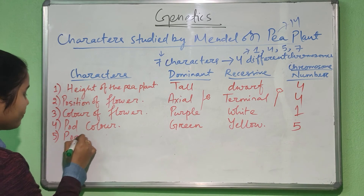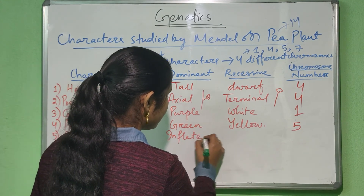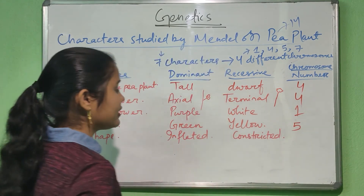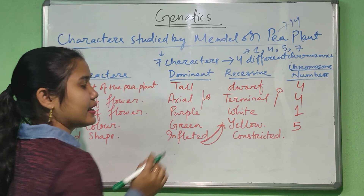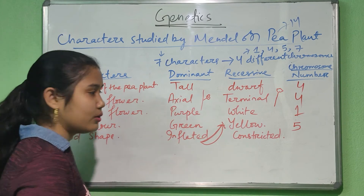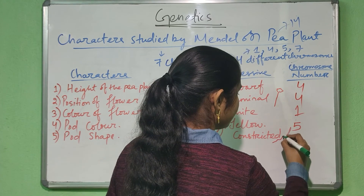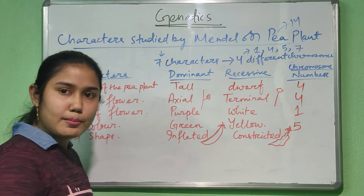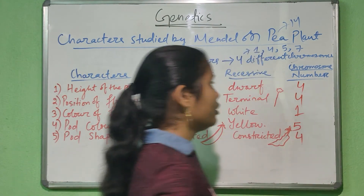The fifth character is the pod shape. The pod can be inflated or constricted. An inflated pod is smooth and rounded — it is the dominant character. A constricted pod has indentations — it is the recessive character. This character is present in the fourth chromosome.